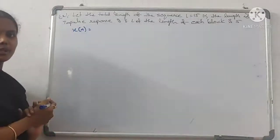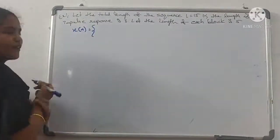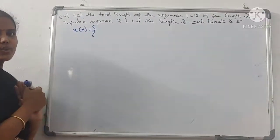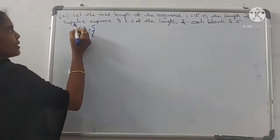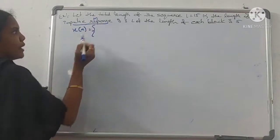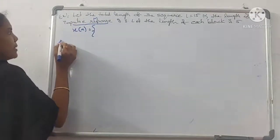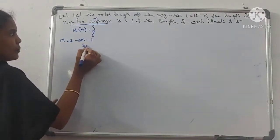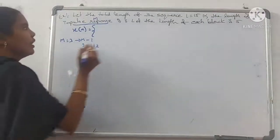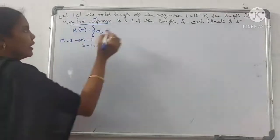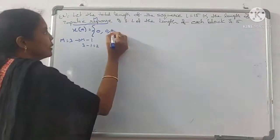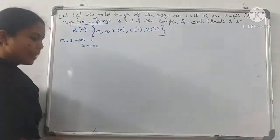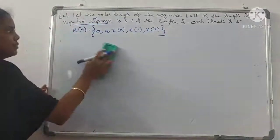The first step of the overlap save method is to add M minus 1 zeros. The impulse response length M equals 3, so we add M minus 1 equals 2 zeros: 0, 0. Then the inputs are x(0), x(1), and x(2). Each block has length 5.